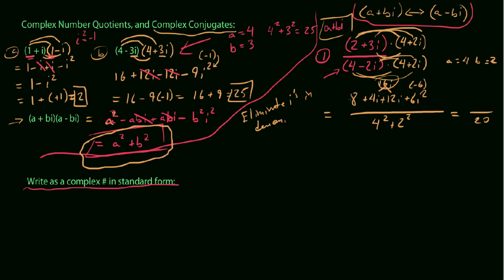So on top, we end up with this 8, positive 8, negative 6, which is 2 for our real part, and then negative 16i, so 2 minus 16i. So now, recall that I said we're supposed to be writing this as a complex number in standard form.